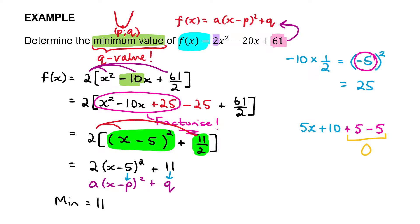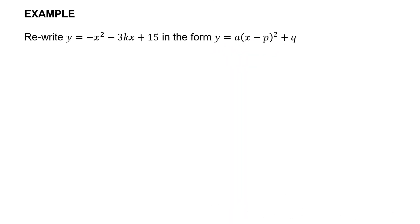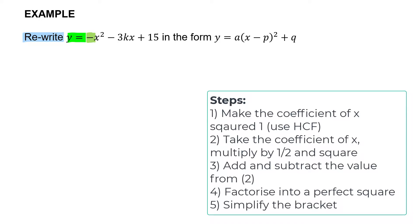Now we look at the same kind of question but with variables. The last example says: rewrite y = −x² − 3kx + 15 in the form y = a(x − p)² + q. First, identify whether you're dealing with an equation or an expression. The word 'rewrite' and the y = both tell us it's an expression. To start, the coefficient of x² is −1 and we need to make it +1, so we take out a highest common factor of −1, giving us −(x² + 3kx − 15).